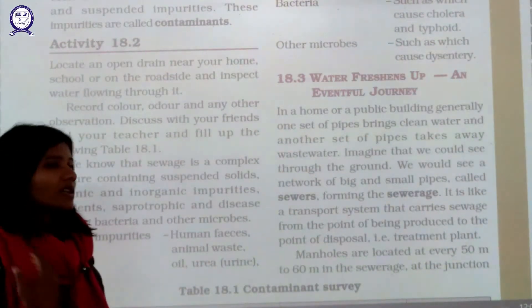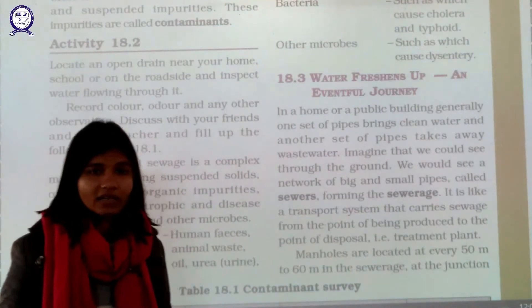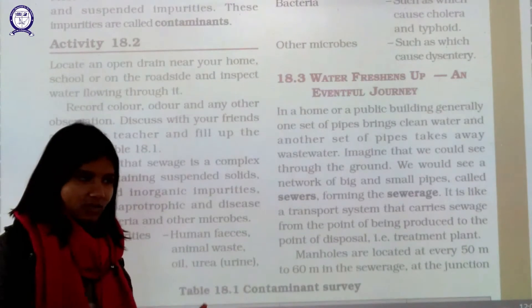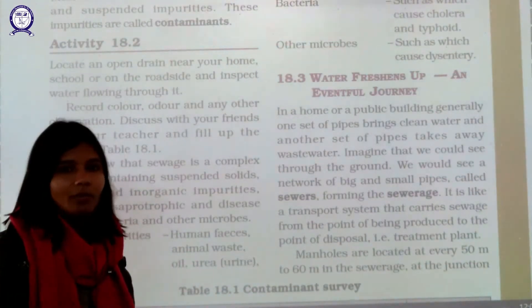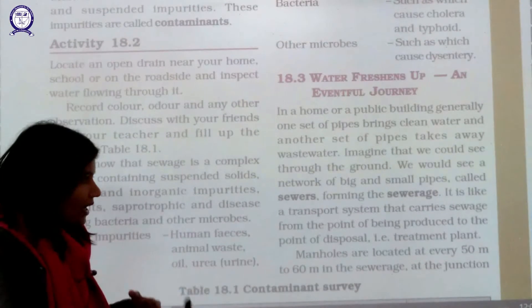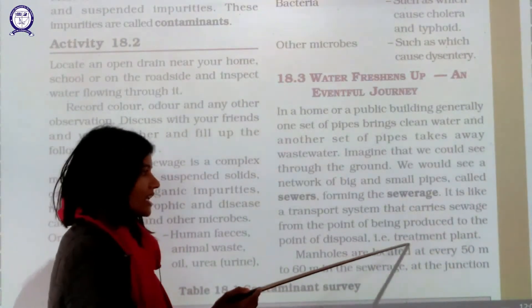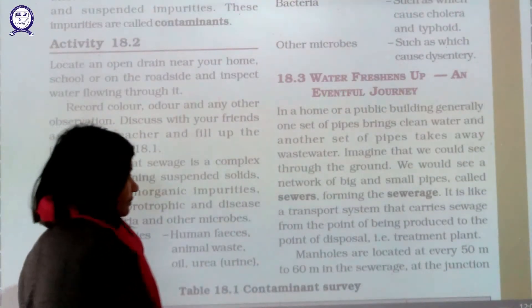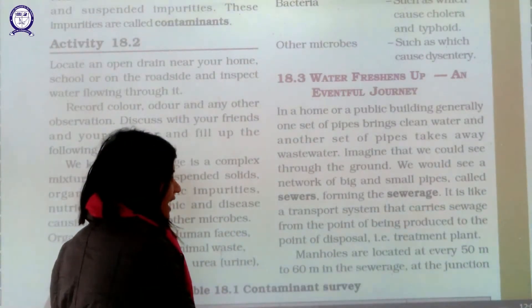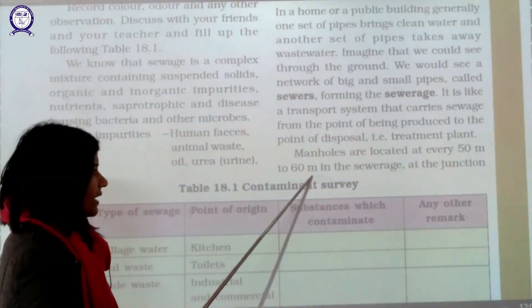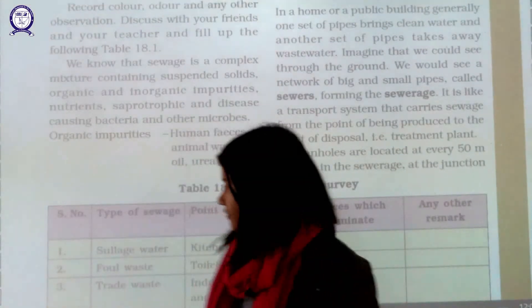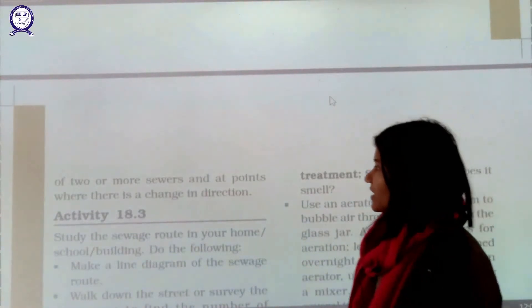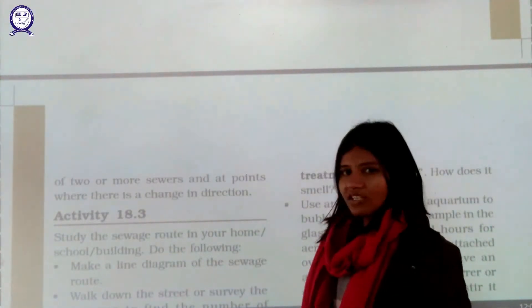Just like transport vehicles carry you from one place to another, sewer pipes transport sewage from your home to the treatment point — known as the treatment plant — where the water gets purified. Manholes are located at every 50 to 60 meters in the sewerage, at junctions of two or more sewers and at points where the direction changes.